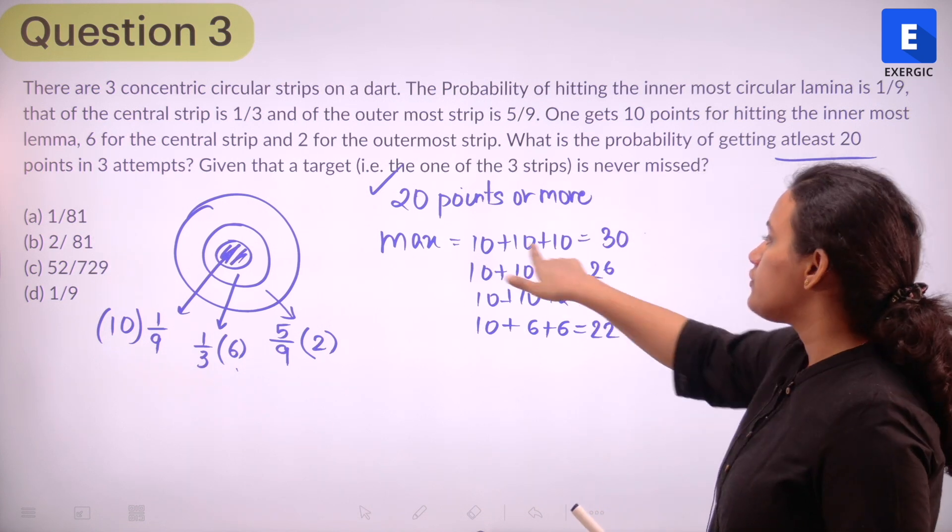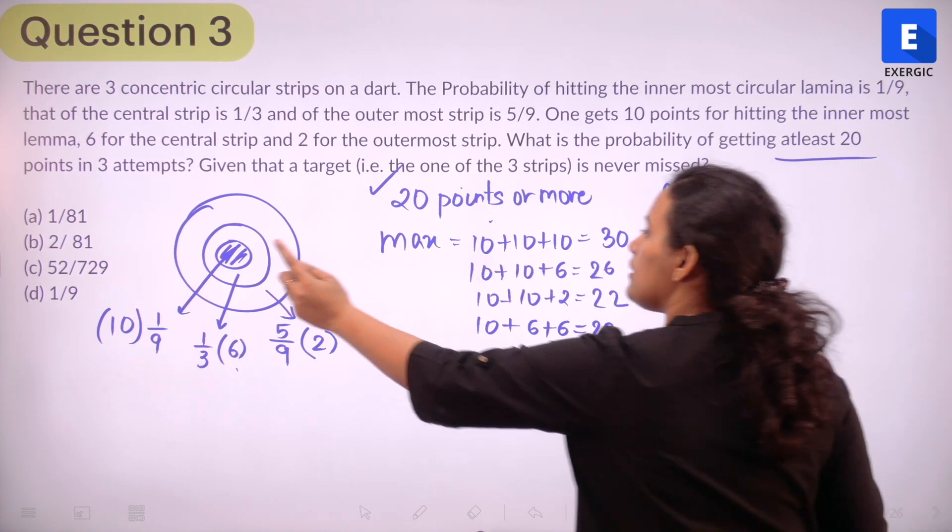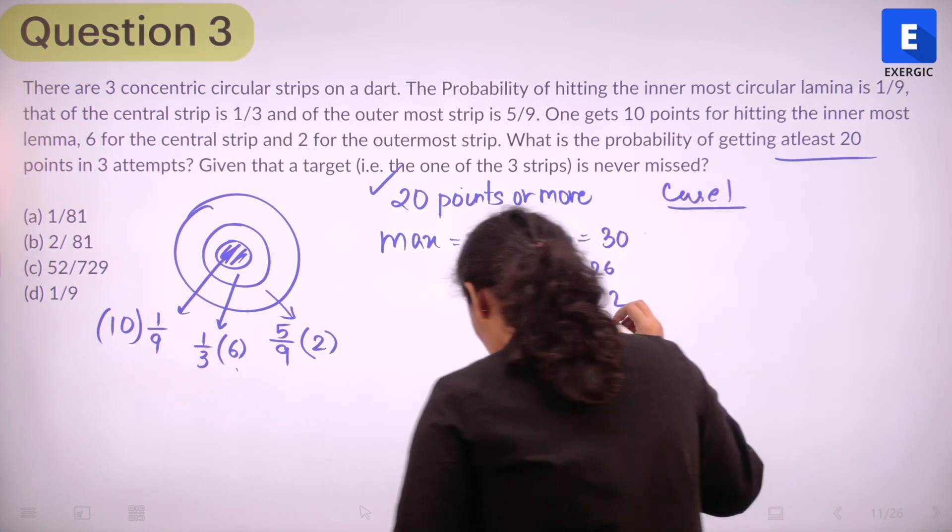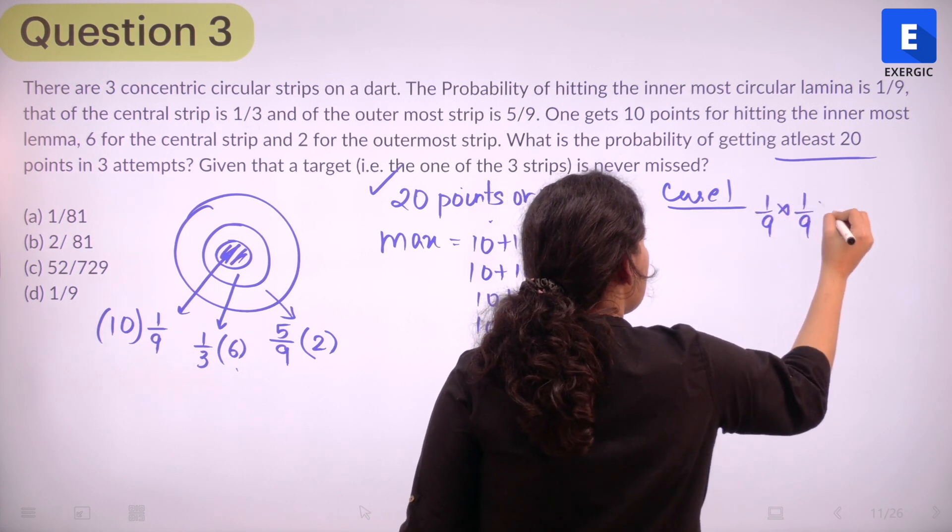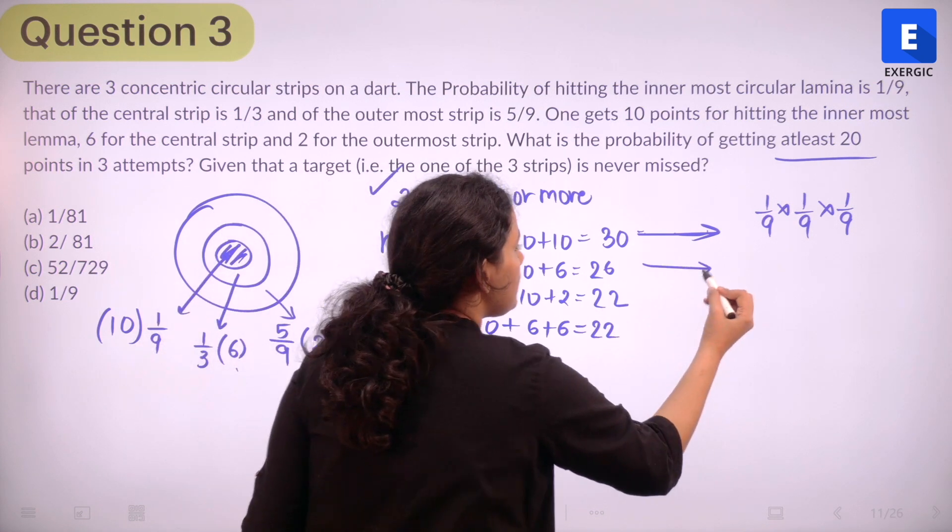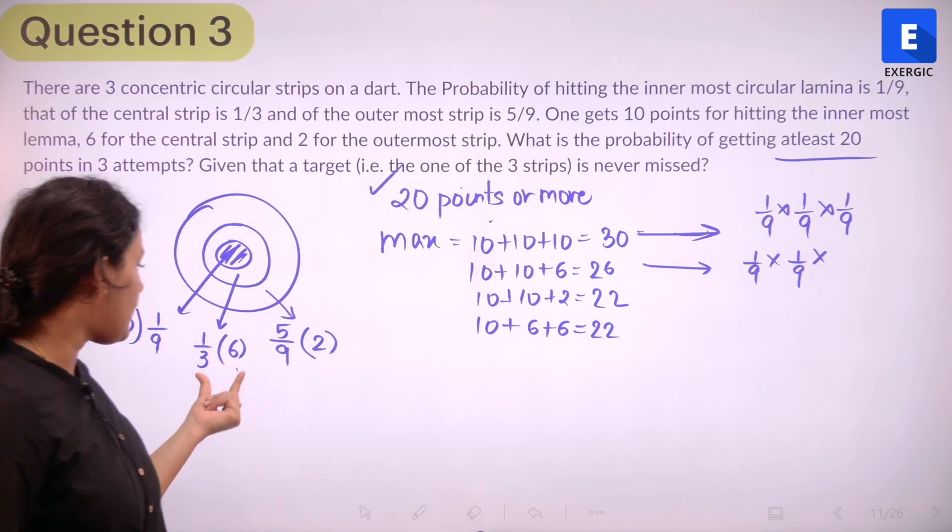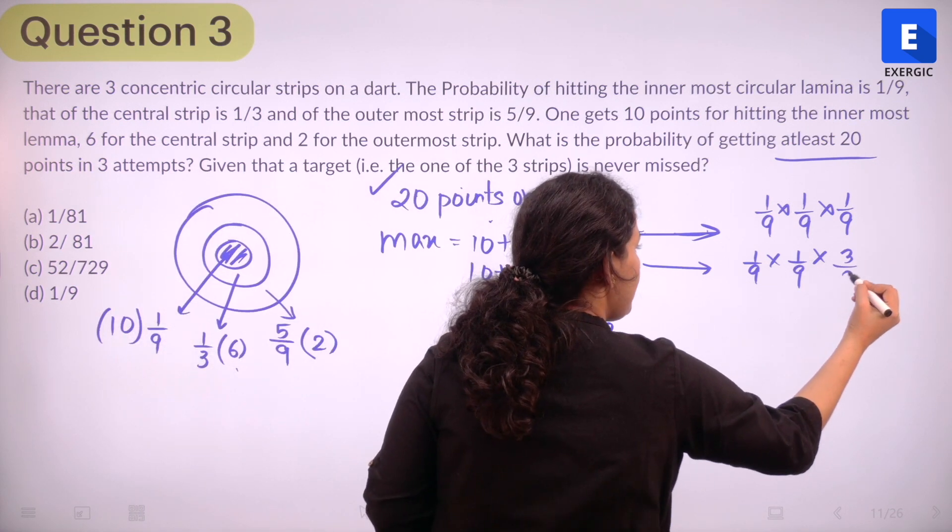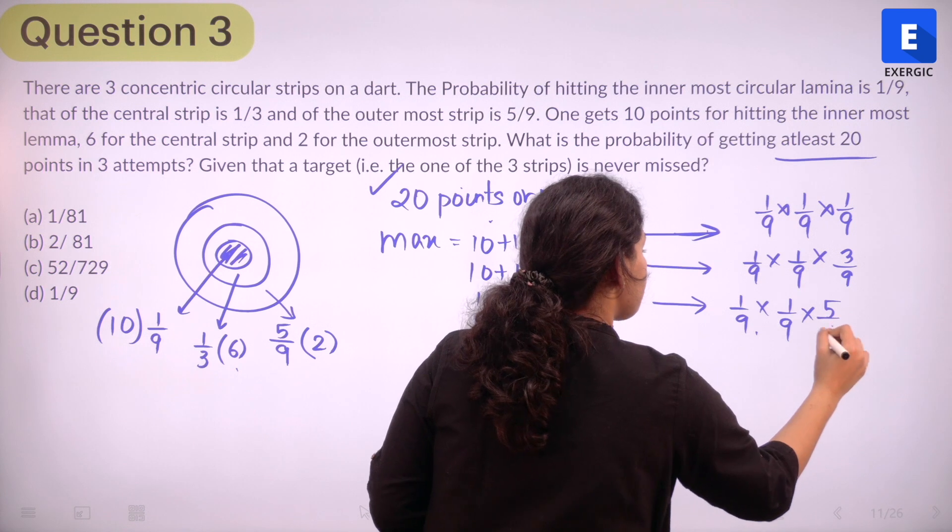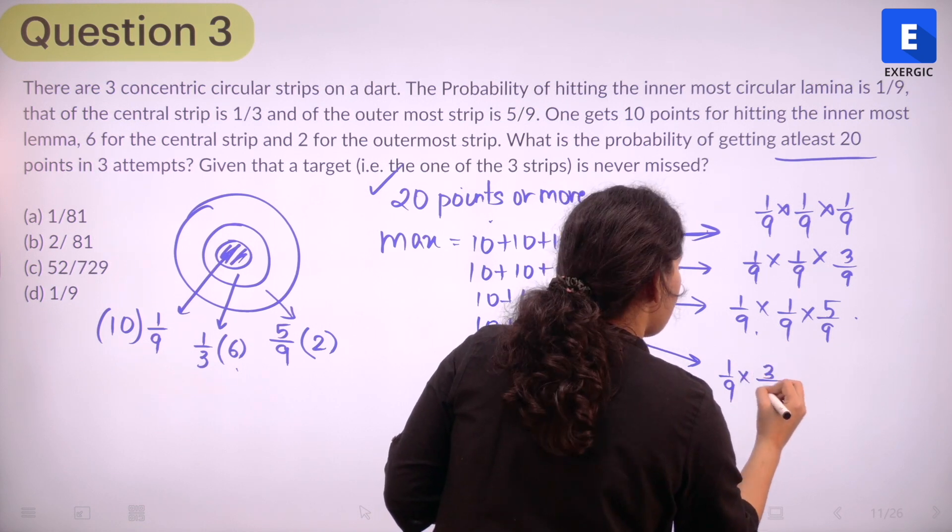So in the first case, what is the probability if I look at case 1? If I look at case 1, where I am hitting the innermost part of the circle three times, what is the probability of hitting that part? It is 1 by 9, right? So 1 by 9 and 1 by 9 and 1 by 9. This is case 1. The second case, I hit this innermost part once, innermost part again and then the middle part. Middle part probability is given as 1 by 3. So let me write this as 3 by 9. What about the third case? Again, 1 by 9 and 1 by 9 and I am hitting the outermost part which is 5 by 9 and finally I have 1 by 9 and 3 by 9 and 3 by 9.